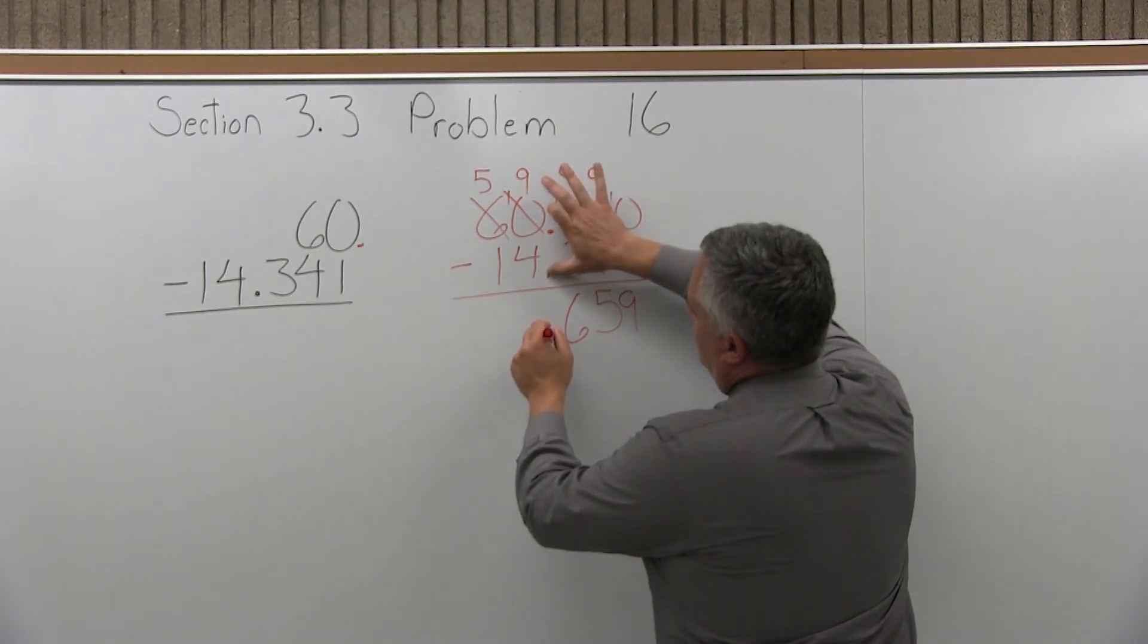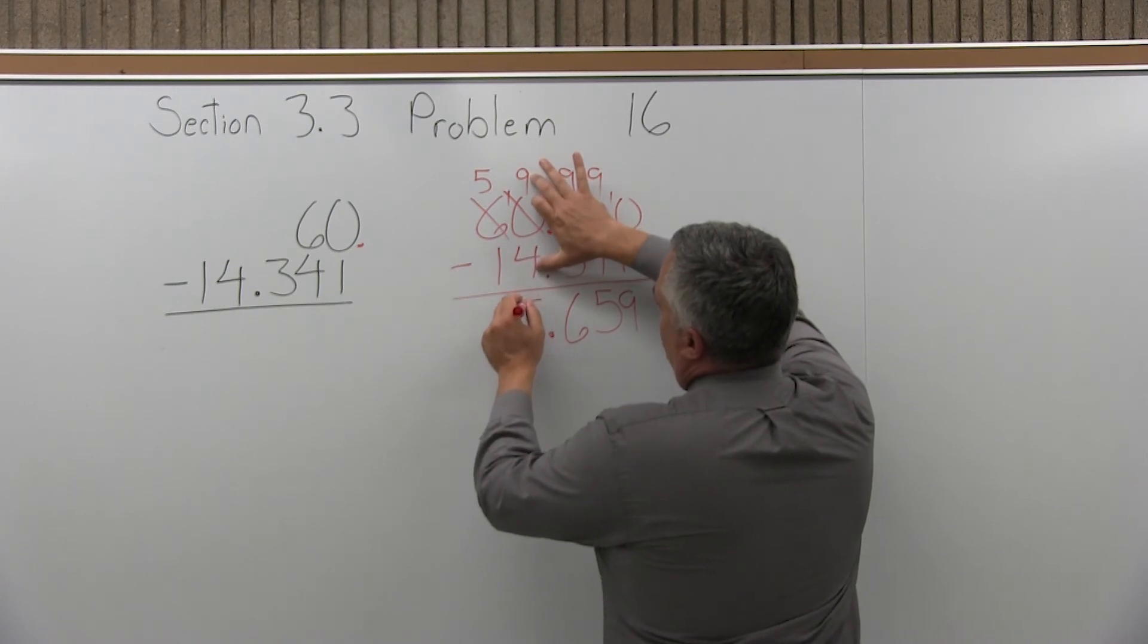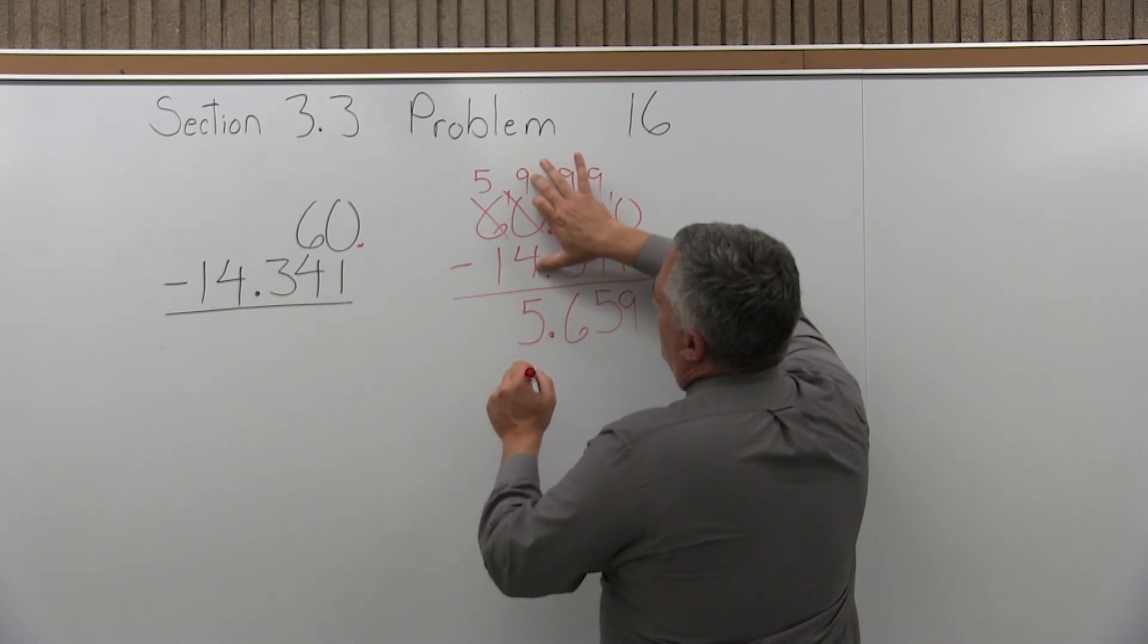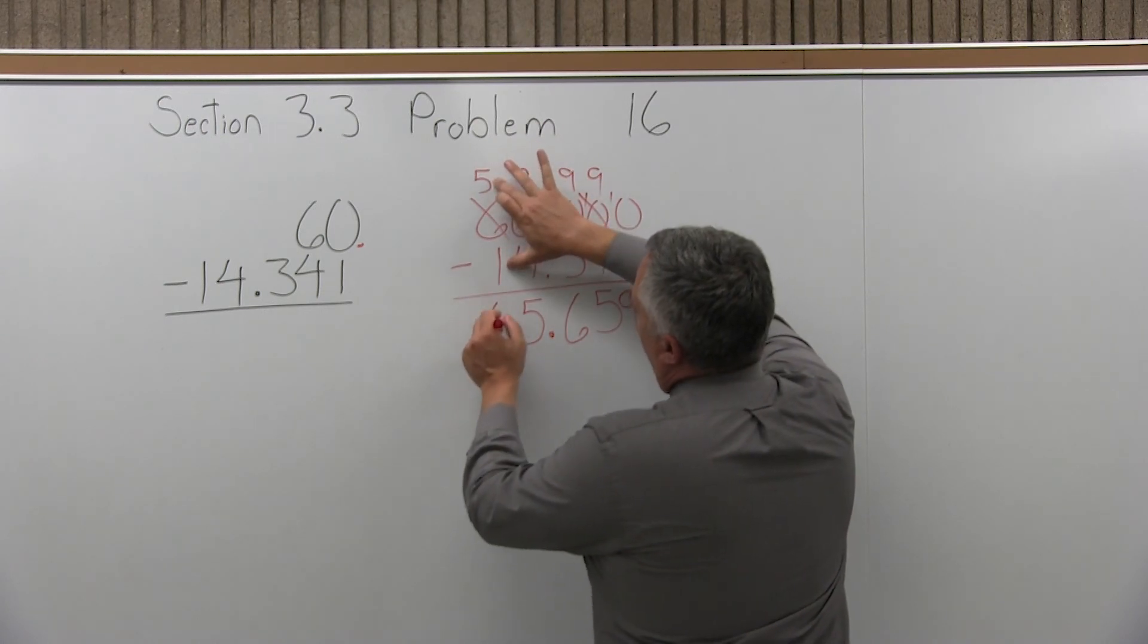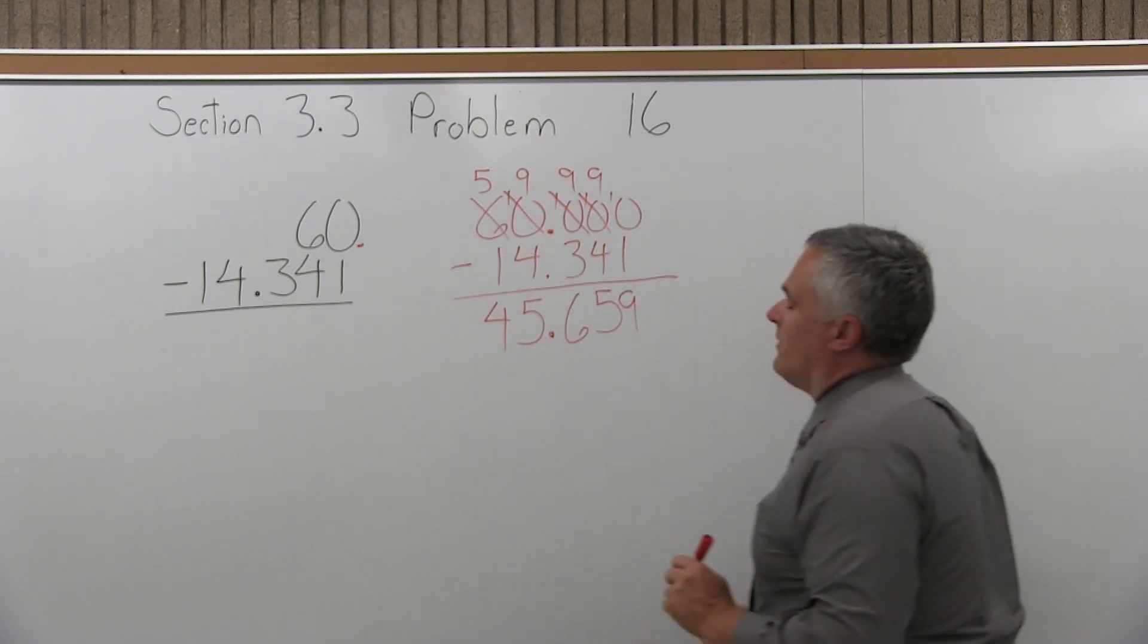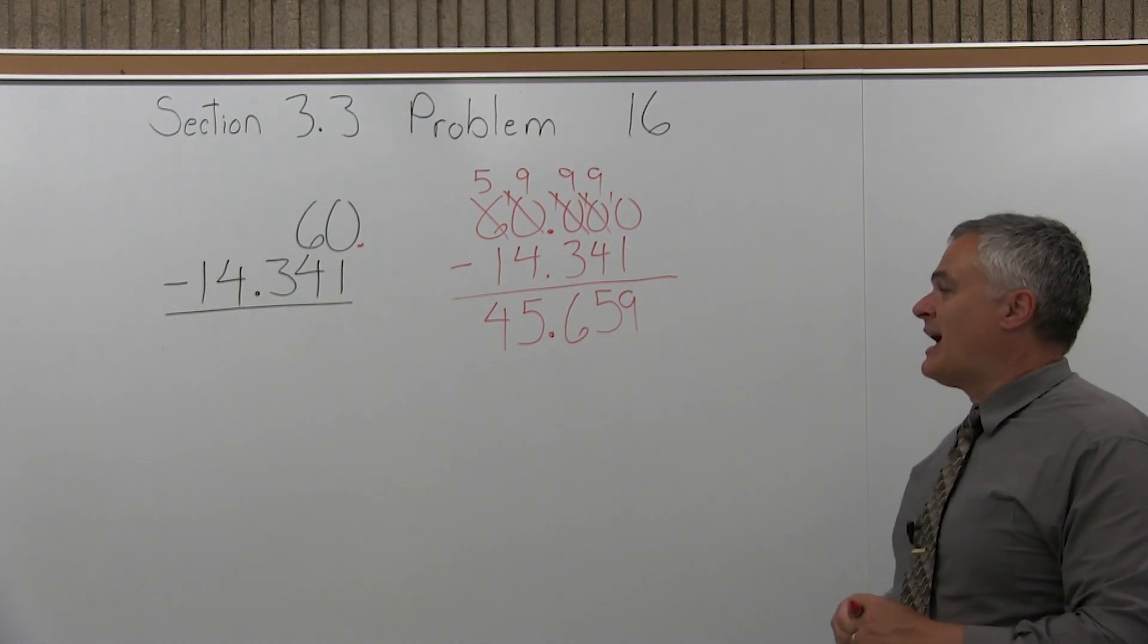Then after that we have the decimal, which comes straight down into our answer. Then we have nine minus four, which is five. And then we have five minus one, which is four. So our answer is 45.659.